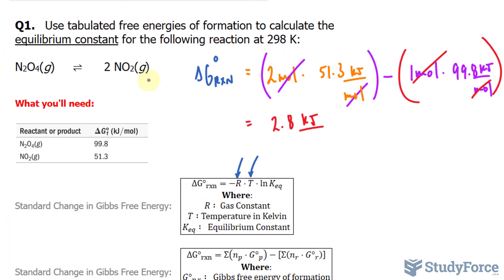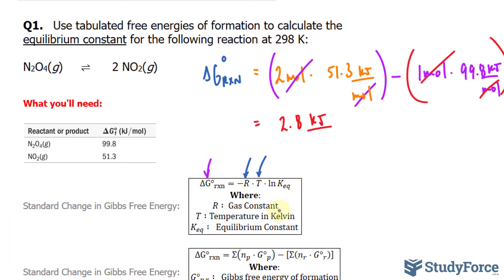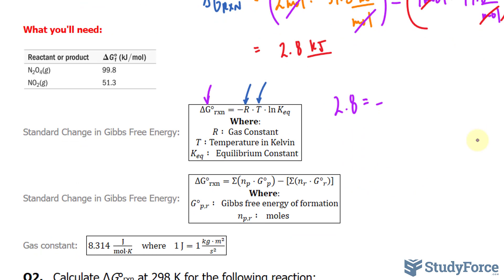Now we have this value, which we can substitute into this equation. 2.8 equals negative, and that gas constant is 8.314. It's in joules, so you can either change this into kilojoules or change this number into joules. I'd rather change this number to joules, so I'll multiply this by 10 to the power of 3. This is being multiplied to 298, and we have ln of k, our constant.